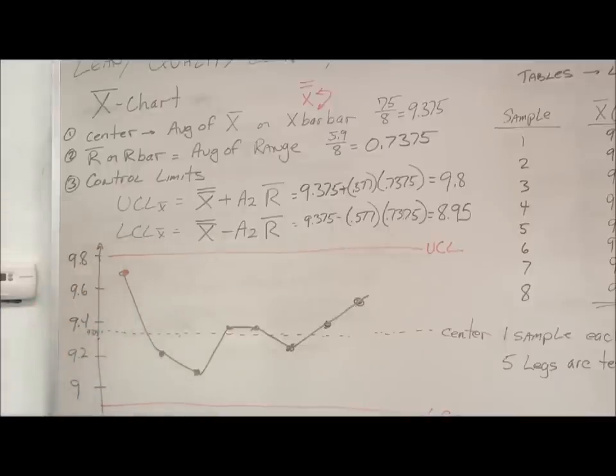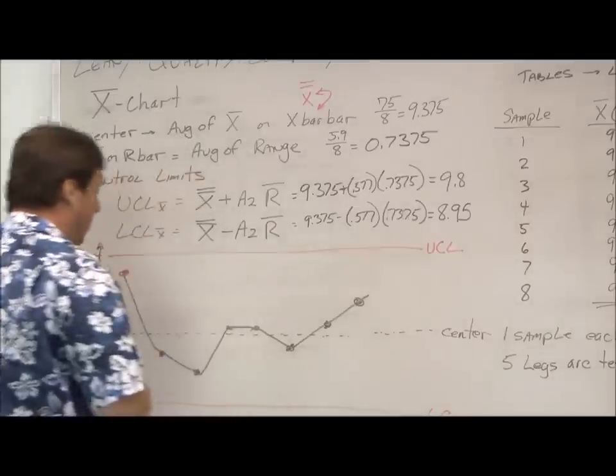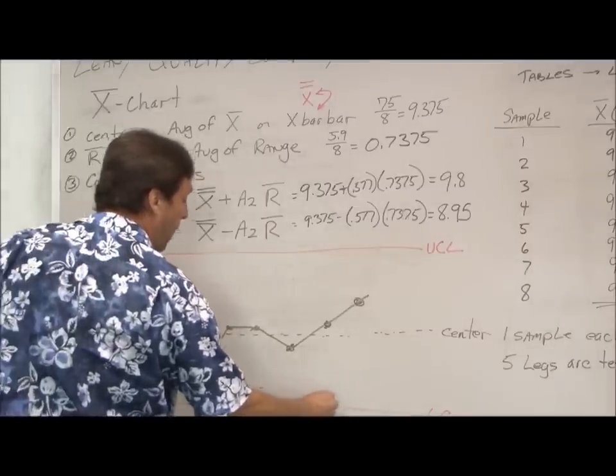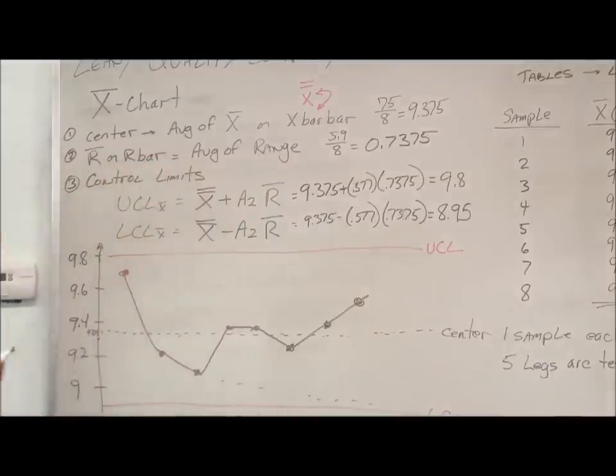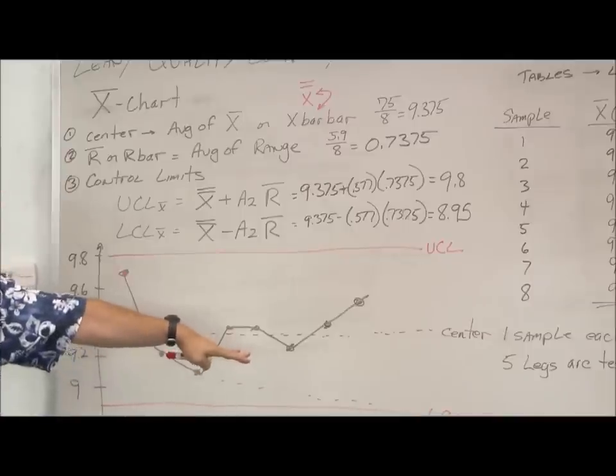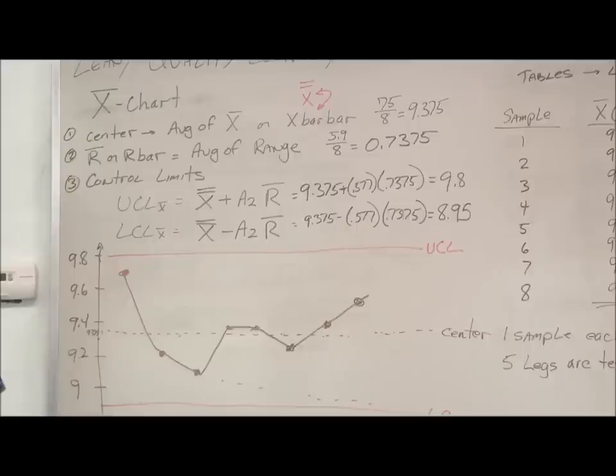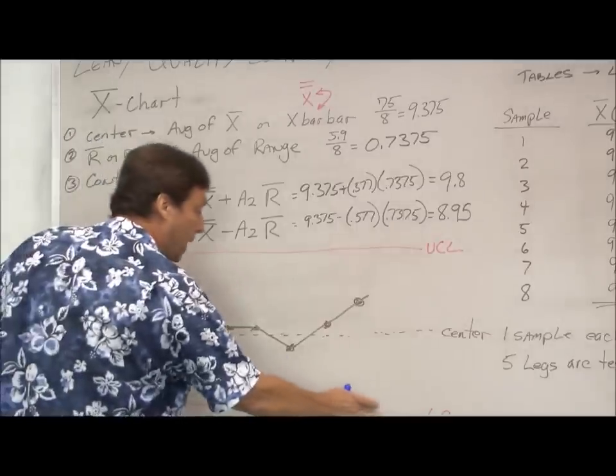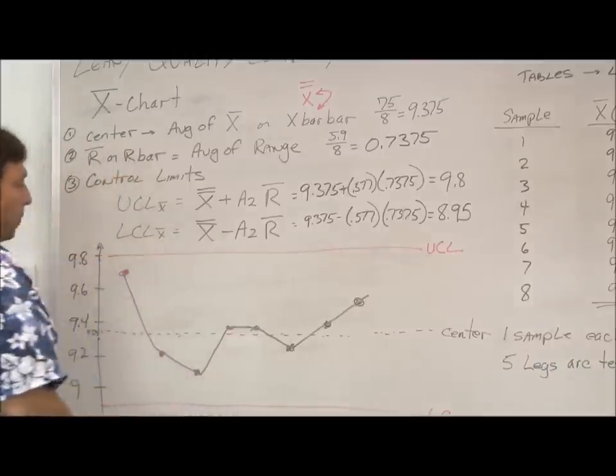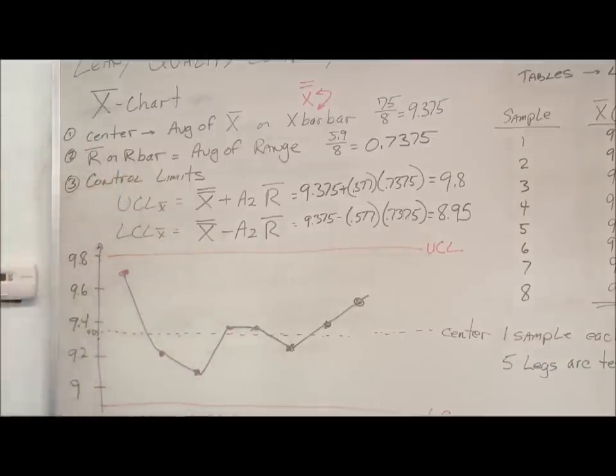The book gets into a little bit of other things where you watch for trends. Like if all these numbers started trending down, typically you'd shut down the system and recalibrate because that's telling you if you have more than four or five in one direction, then it's no longer random, then something's shifted in your process. But that's a more advanced topic. But right now, let's just worry about keeping them between the upper and lower control limits.